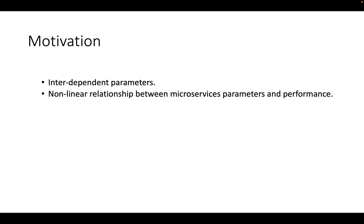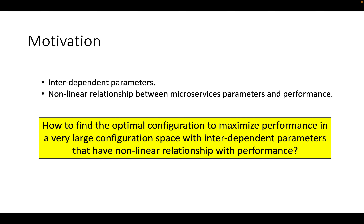Apart from the challenges we saw, there are other challenges when it comes to tuning parameters of microservices applications. The first one is the interdependency of parameters — that is, parameters can depend on the values of other parameters in the same microservice or values of parameters in a different microservice. Also, the relationship between the parameter values and the performance need not always be linear. So the main objective is: how to find the optimal configuration to maximize performance in a very large configuration space with interdependent parameters that have a nonlinear relationship with performance.